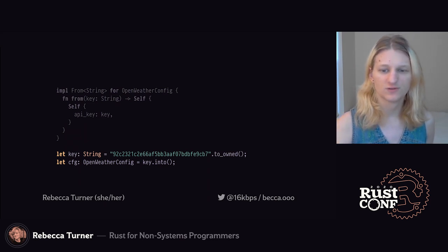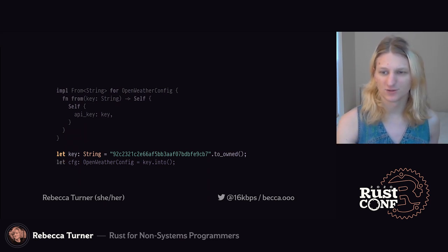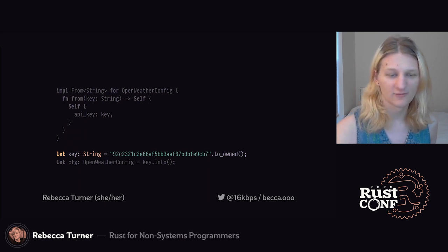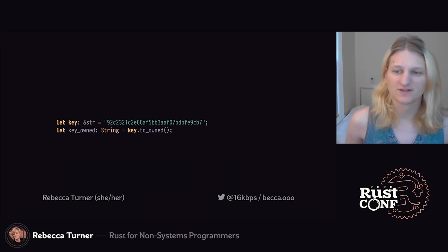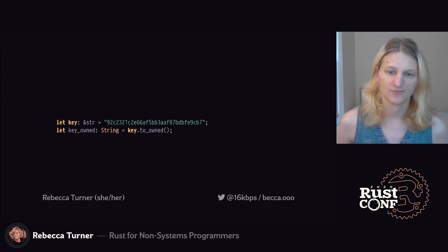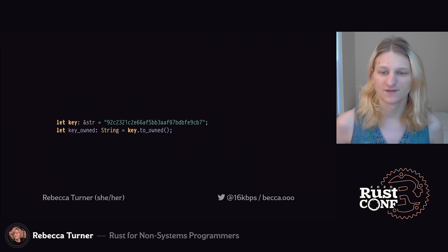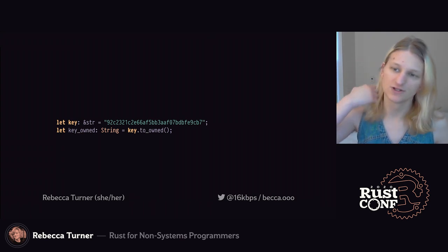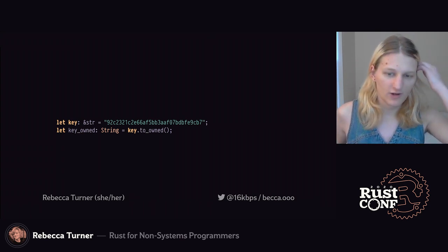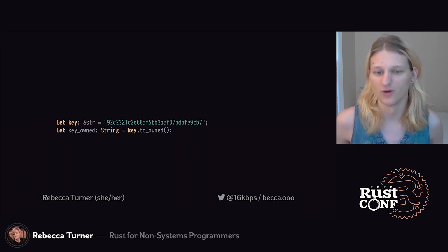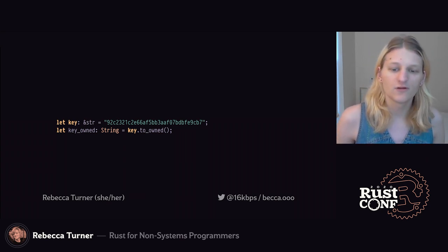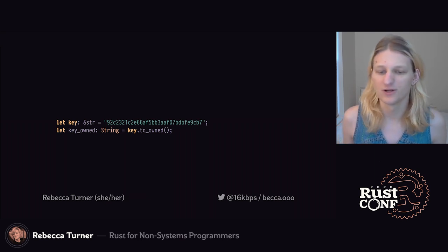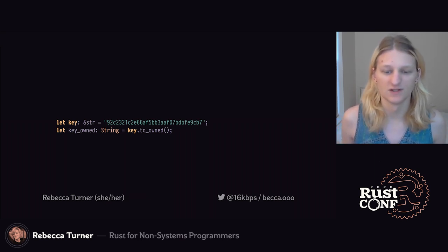But about that to_owned call — what's the deal? Shouldn't a string literal already be a string without calling another method? In Rust, string literals get baked into the compiled binary directly. Because that data is always sitting in a fixed location in the binary, we can't change it without copying it into memory first, because if we changed it there it would change it for everyone else using the string literal. So if we want a string that belongs to us, rather than one referencing data elsewhere in the program, we have to call the to_owned method to convert it, which creates a new String object and copies the data we need into it.